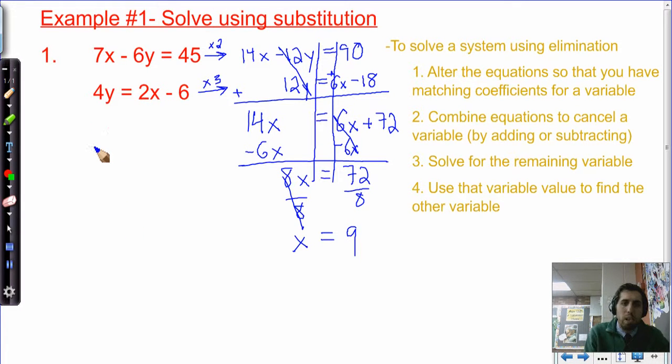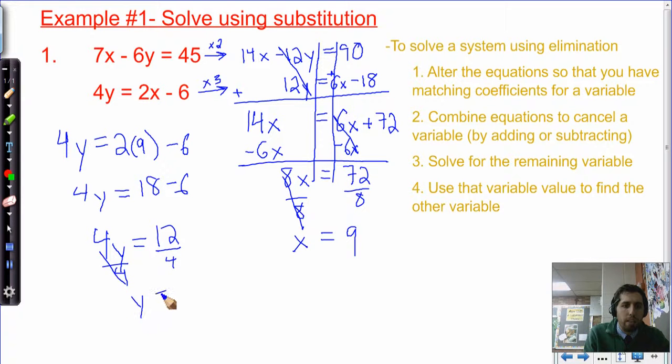Now, if they're going to cross when x is 9, well, what's y going to be? Well, it's going to be whatever y is when I plug in 9 for x in either equation. So 4y equals 2 times, not x, but we know we're looking at x equals 9 minus 6. So 4y equals 18 minus 6. 4y then equals 12. Divide both sides by 4. And we're going to get y equals 3. So where do these lines intersect? They intersect at 9, 3.